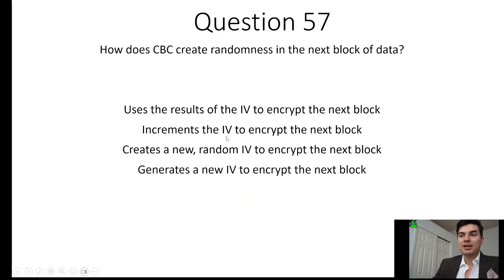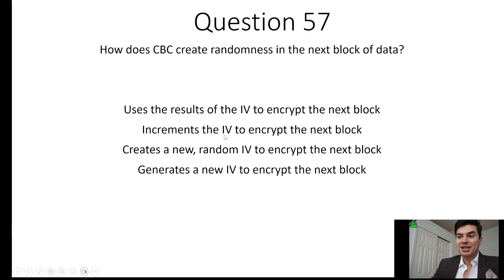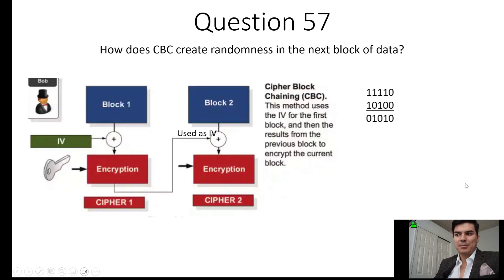Question 57: How does cipher block chaining (CBC) create randomness in the next block of data? CBC uses the results of the initialization vector to encrypt the next block of data. The option that says 'increments the initialization vector' refers to counter mode, which just keeps counting up. With the first block of data, the data goes through the initialization vector, gets encrypted, creating cipher-text 1. That cipher-text 1 is then used as the initialization vector for block 2.